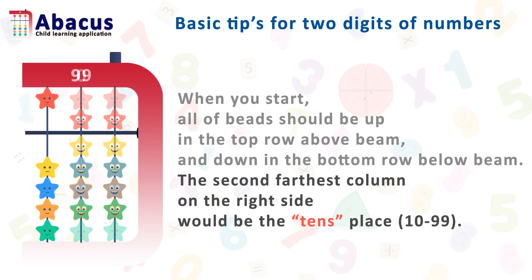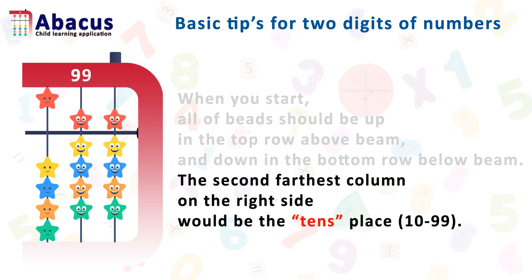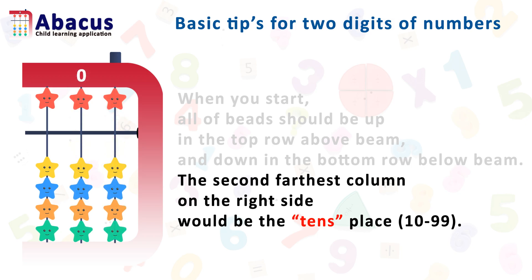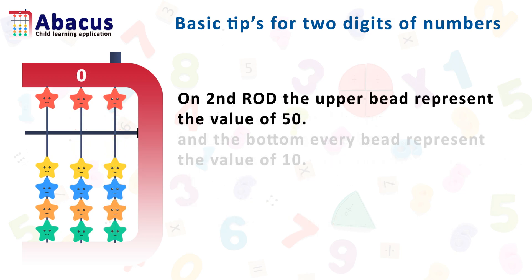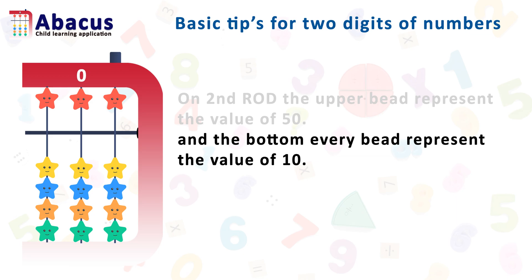The second farthest column on the right side would be the 10th place. One more tip: on the second row, the upper bead represents the value of 50, and on the bottom, every bead represents the value of 10.